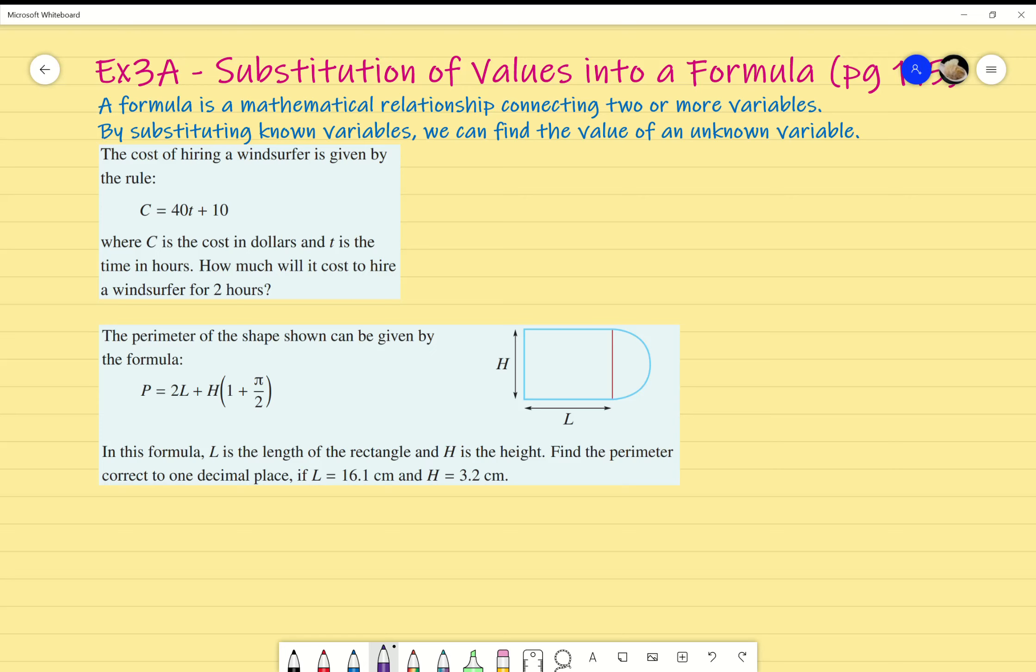So, by substituting the variables that we know, we can find the value of an unknown variable. That makes sense. If I'm substituting, for example, the radius of a circle, then I can find the area of the circle based off the formula.